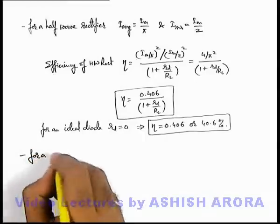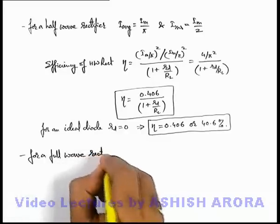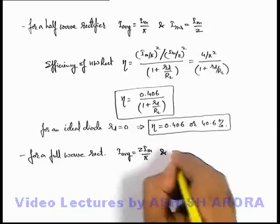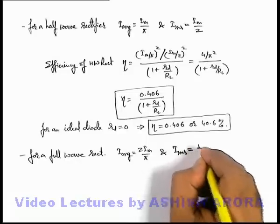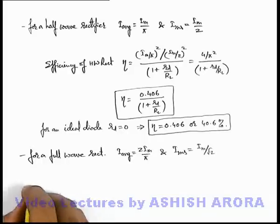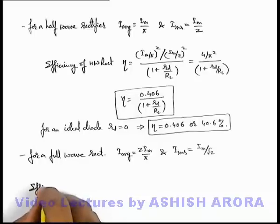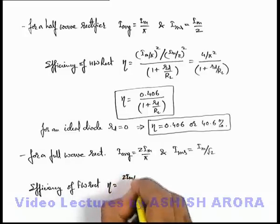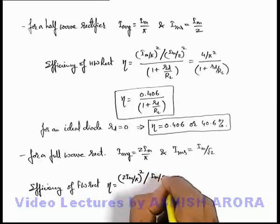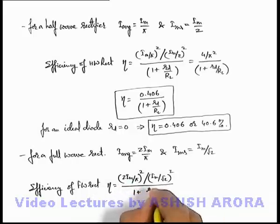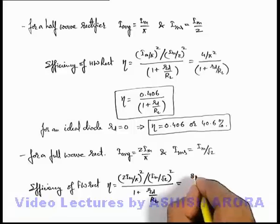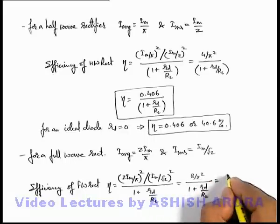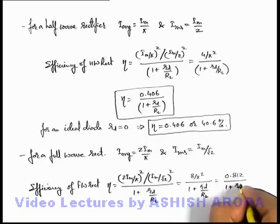Similarly, for a full wave rectifier, we already studied that the average value of current is 2I_m by pi, and the RMS value of current is I_m by root 2. Substituting these values into the efficiency formula, the efficiency of the full wave rectifier is given by (2I_m / pi) whole squared upon (I_m / root 2) whole squared, divided by (1 + R_d / R_L). On calculation this gives 8 by pi squared upon (1 + R_d / R_L), which equals 0.812 / (1 + R_d / R_L).